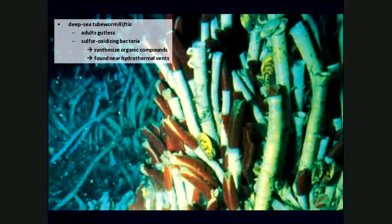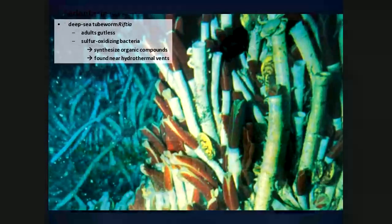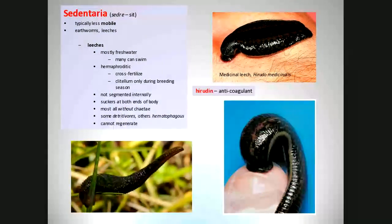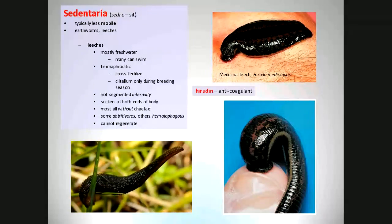The other group — earthworms and leeches — is typically less mobile. Within the annelids, we've broken the group into those that move a lot (the Errantians in the ocean) and those that don't move as much. Earthworms move but not a whole lot. Leeches do move, but being parasites, they don't move much — they sit and wait for a host to walk by. Leeches can sit on leaves and attach to you as you're brushing through brush or forest.